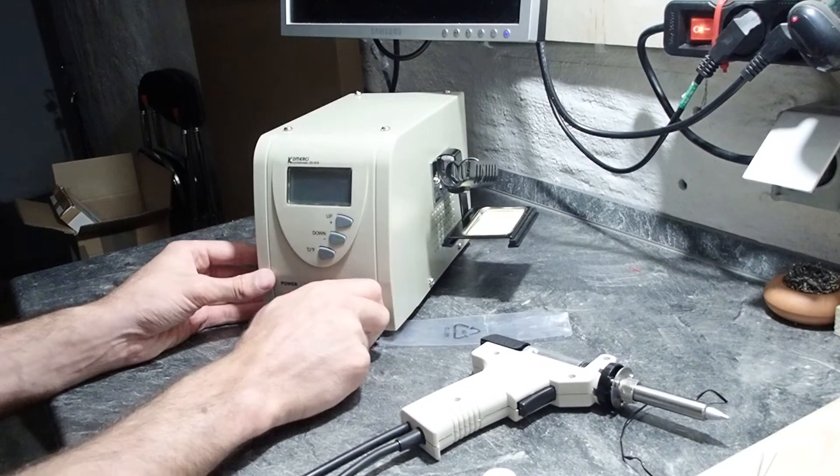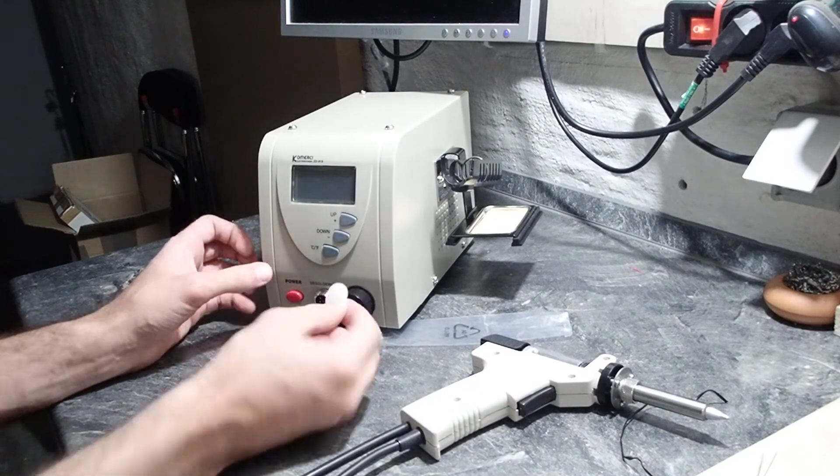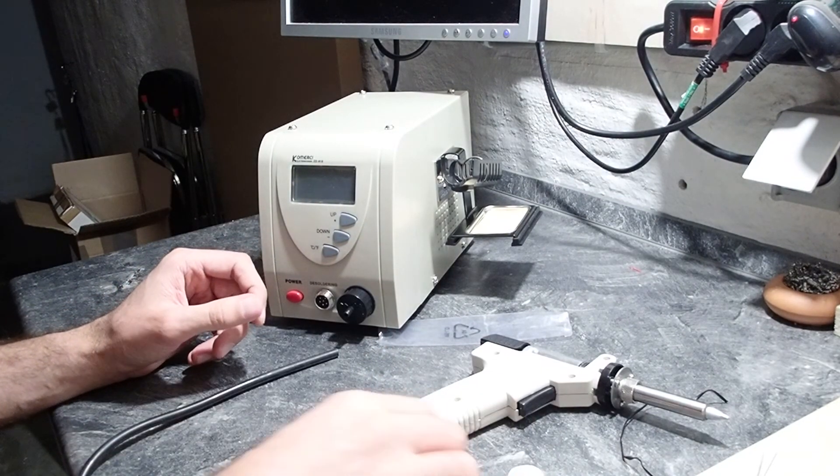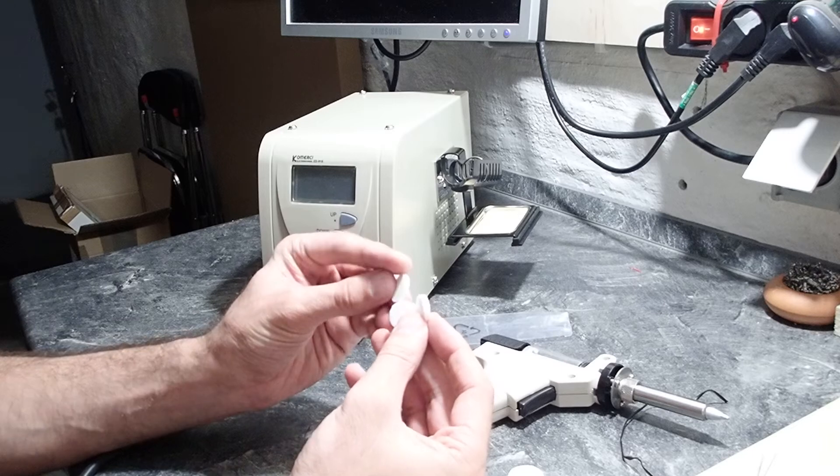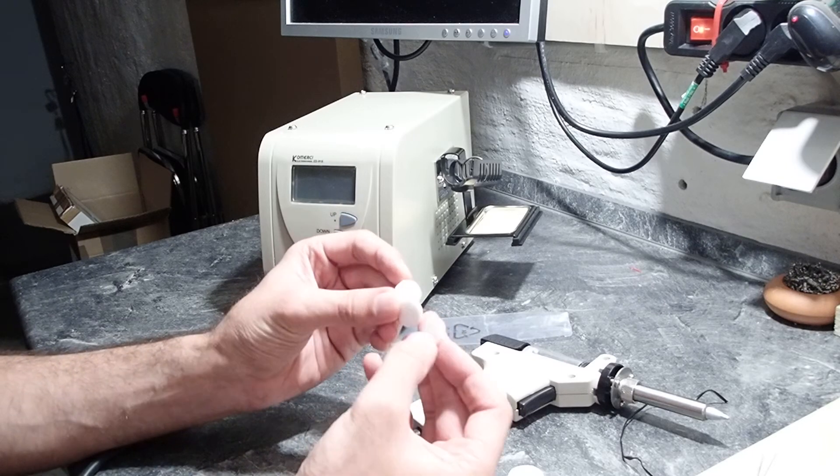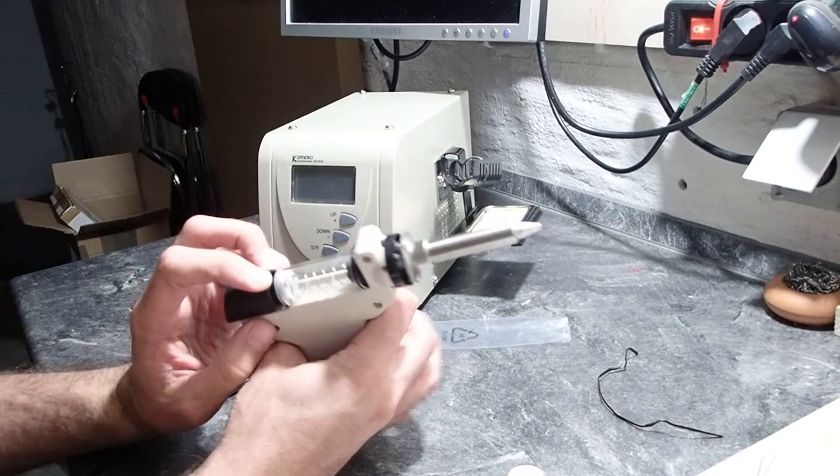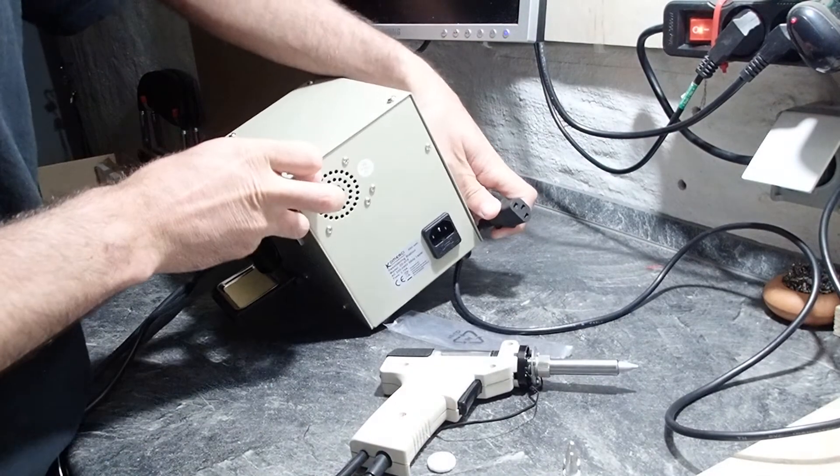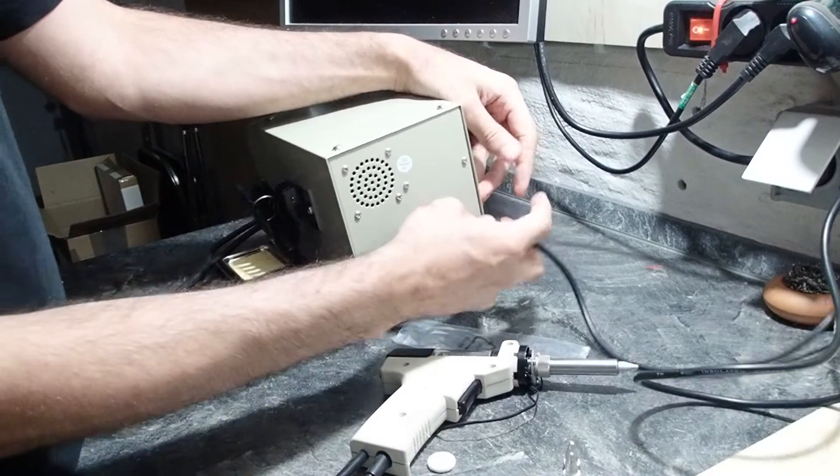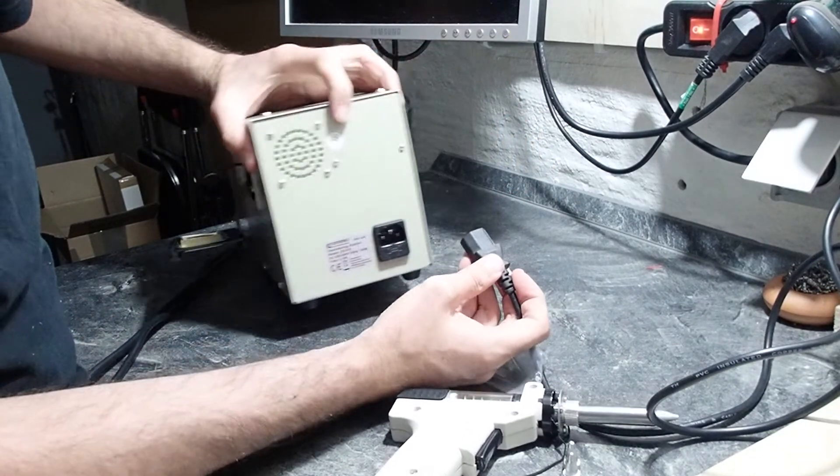The smaller ones are going into the desoldering gun. I think we will look at it later. But now let's try the station itself.